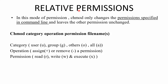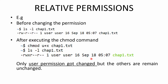In relative permission mode, the command changes the permission specified on the command line and leaves other permissions unchanged. To use chmod for relative permissions, you first mention the category: user is u, group is g, others is o, and if you want to set for all then use the option a. Then specify the operation: plus to add, minus to remove the permission. The permissions are denoted as r for read, w for write, and x for execute.